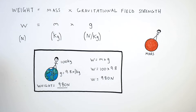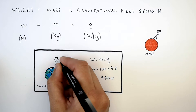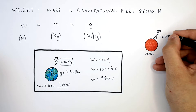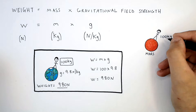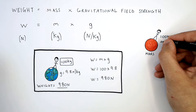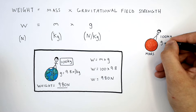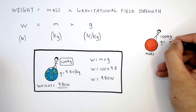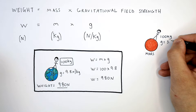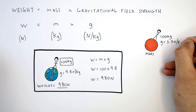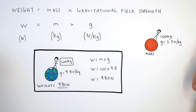So the person now goes to Mars. The person's mass is still 100 kilograms. However, the gravitational field strength on Mars is 3.7 newtons per kilogram — nearly three times less than on Earth.